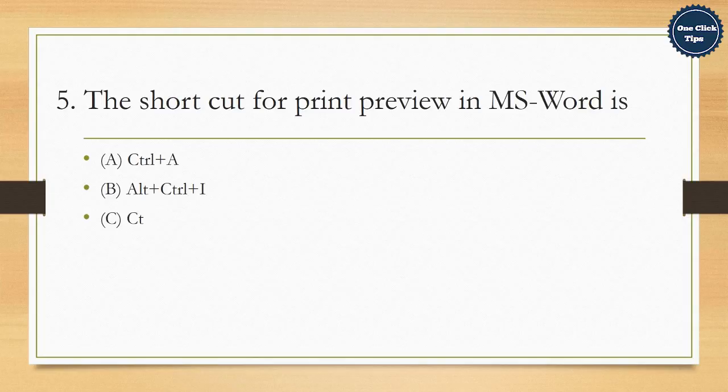5. The shortcut for print preview in MS Word is A. Ctrl plus A, B. Alt plus Ctrl plus I, C. Ctrl plus J, D. Ctrl plus Shift plus K. The correct answer is B. Alt plus Ctrl plus I.